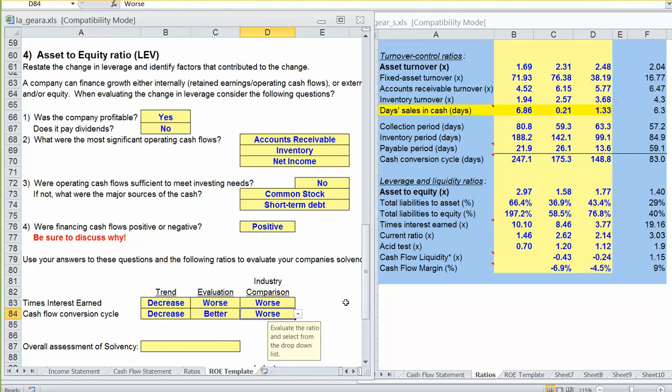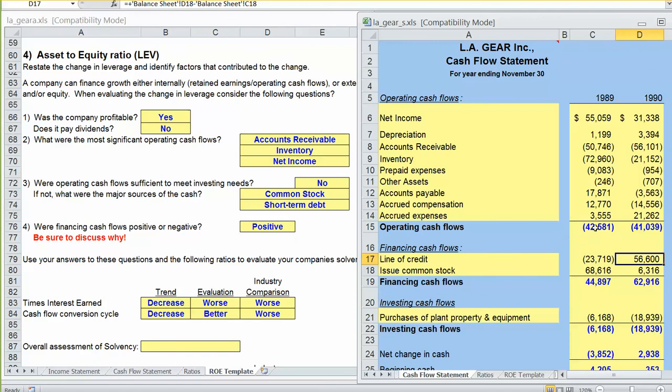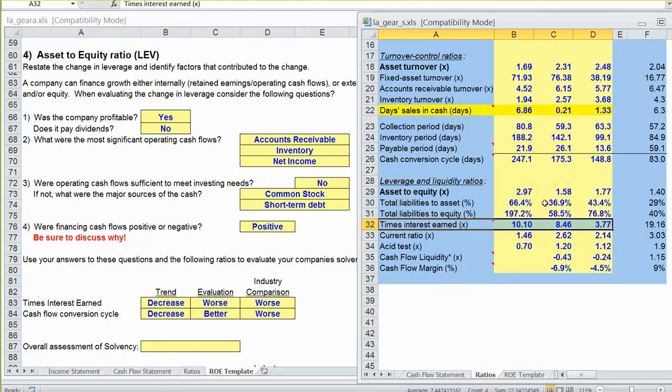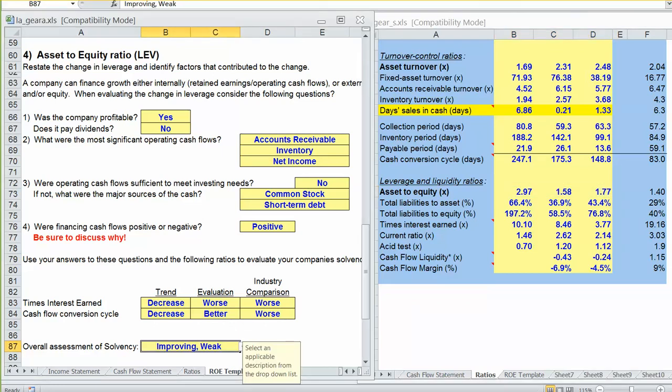So overall assessment, while our financial leverage has gone down, we still have more financial leverage than the industry as a whole. Our times interest earned ratio has gotten worse, and it's worse than the industry as a whole. Our cash flows, poor operating cash flows. So I definitely say we've got some weak, we're fairly weak in terms of overall solvency. But I would also probably say, primarily because of our decrease in our asset to equity ratio, we've probably improved somewhat. So you might pick something different, but I picked improving and weak.